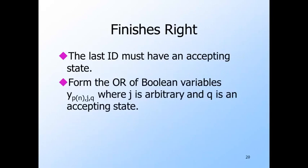Finishes right is easy. M accepts if and only if the last ID has an accepting state, because once M enters an accepting state, it stays in that state until the ID numbered P of N. So we take the OR of the Boolean variables Y-sub-PN,J,Q, where Q is an accepting state and J is anything from 0 through P of N.